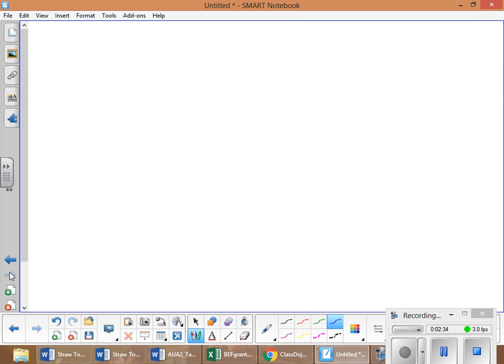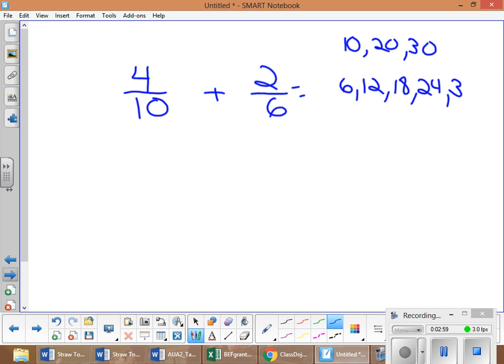We're gonna take a look at the next one. The next one is four-tenths plus two-sixths. Now we have two different numbers. Let's find our common denominator. Let's make a list of our tenths: 10, 20, 30. Let's do sixes: 6, 12, 18, 24, 30. There they are. Looks like they're changing to 30.